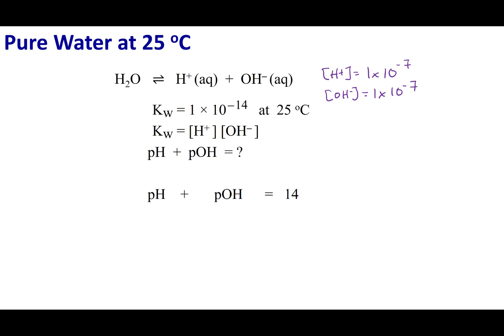So what would happen if we took the pH plus the pOH? If we take the negative log of 1 times 10 to the negative 7th, we get a pH of 7. We can do the same for the OH concentration, and we would get a pOH of 7 as well. So pH plus pOH, 7 plus 7 would get us 14.